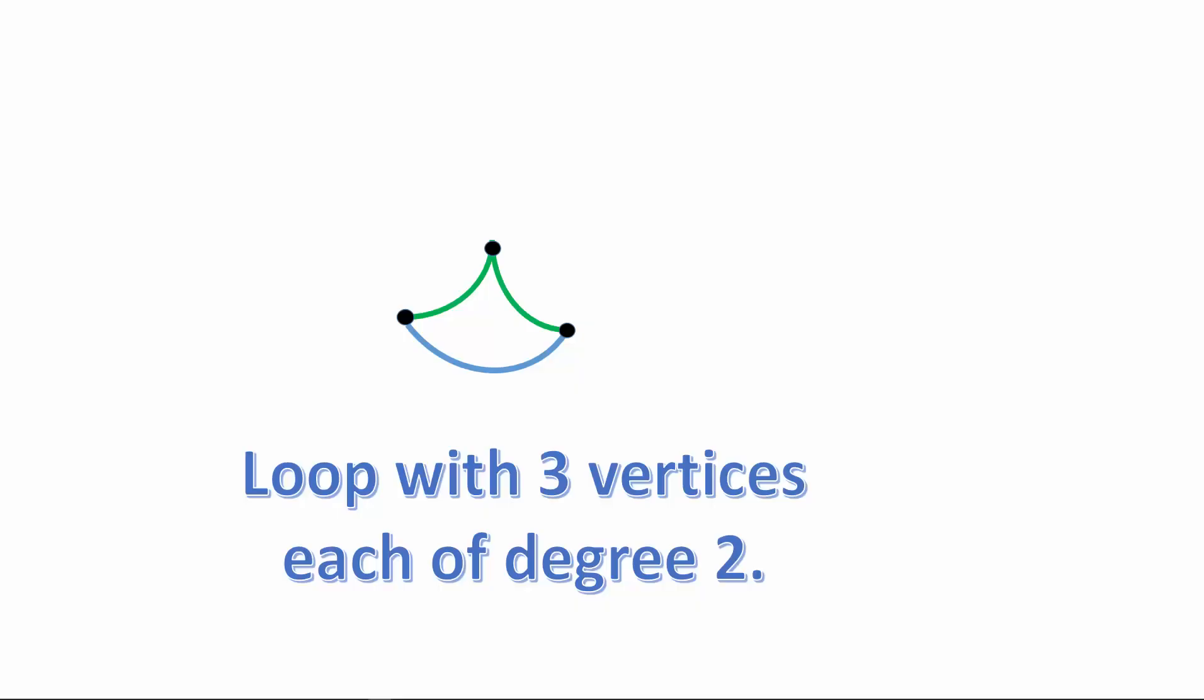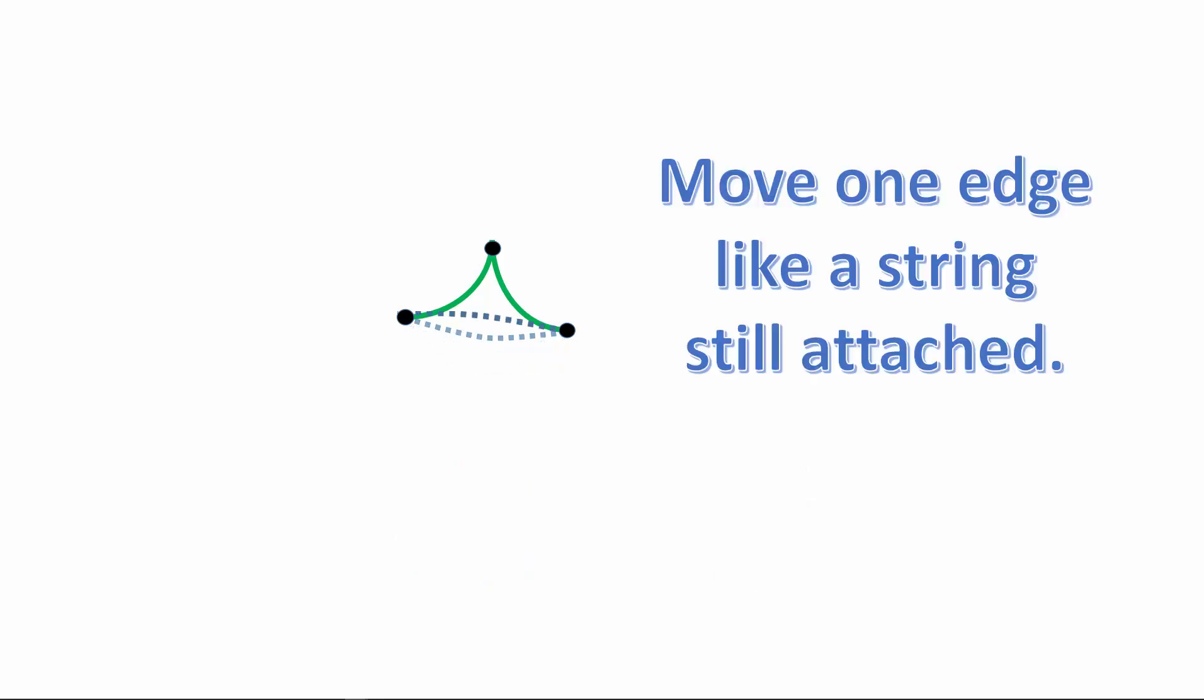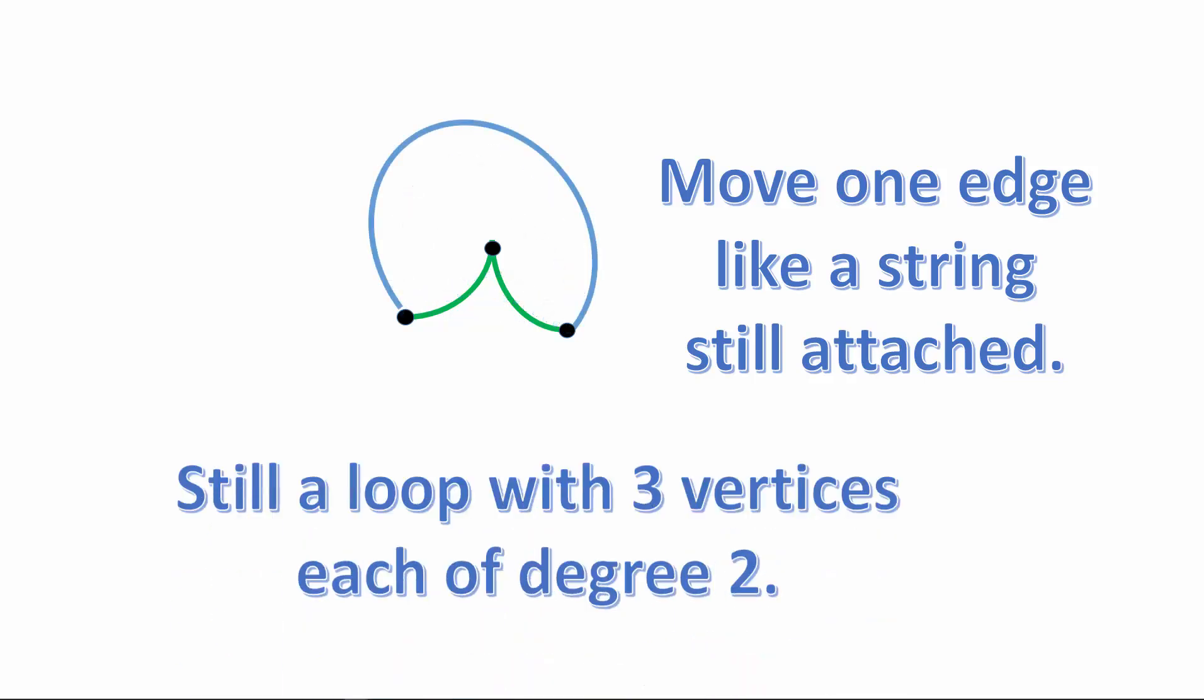They have the same number of vertices, they have the same degree, and they have the same shape. If you imagine that the edges are strings and that we can fold them around, they are pliable, then moving the string results in a graph isomorphic to the first one.